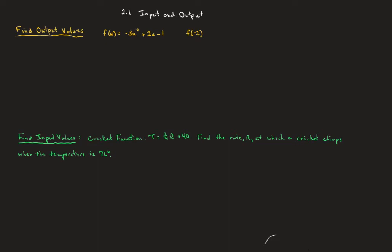We're going to talk about section 2.1, input and output. We're going to find some output values and use our functional notation. Our function is given as f of x equals negative 3x squared plus 2x minus 1, and we want to evaluate that at negative 2.